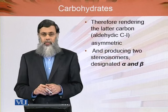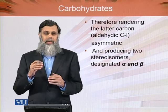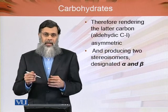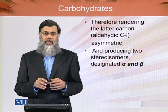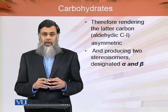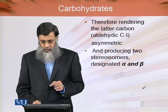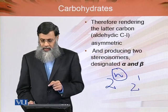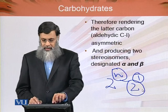Therefore, this renders C1 — the aldehyde carbon — asymmetric. Previously we defined that glucose has four chiral centers (four asymmetric carbons). Here a fifth asymmetric carbon is created, which in the straight chain structure was C1 of the aldehyde group, and therefore it produces two stereo isomers, which are designated as alpha and beta.